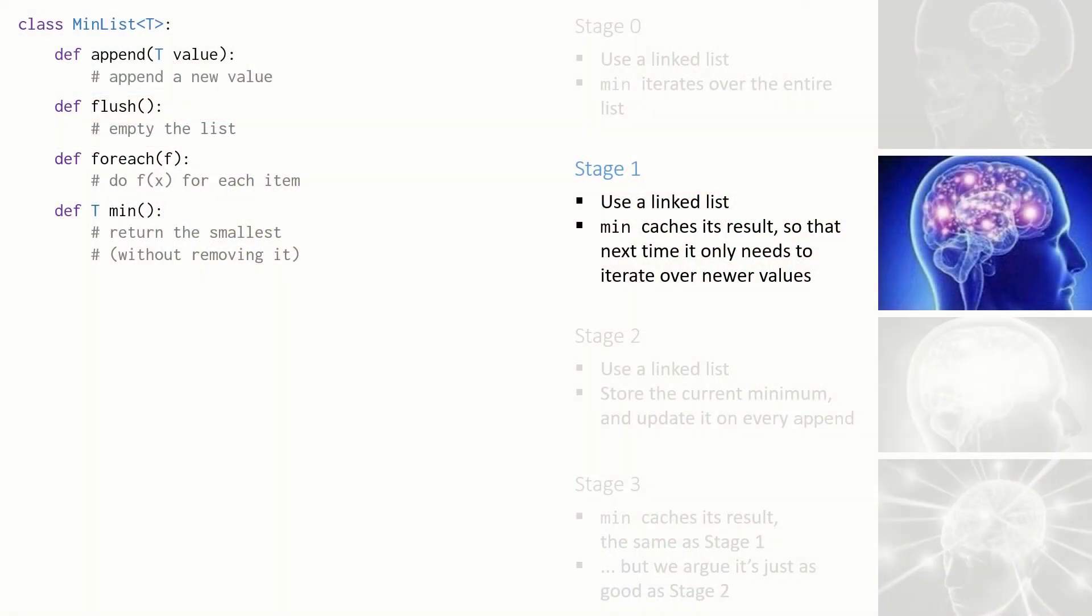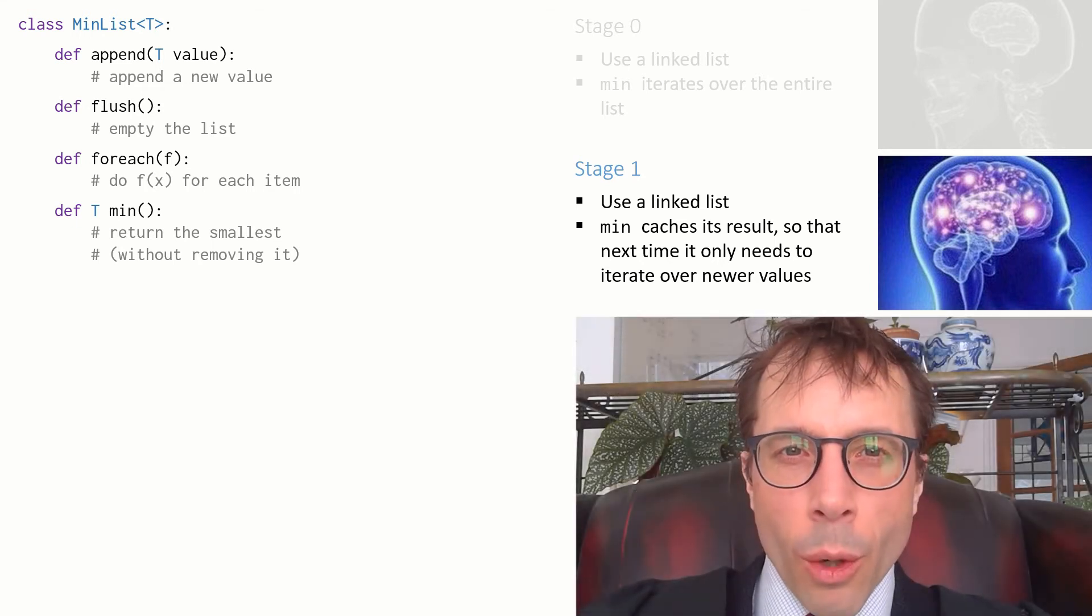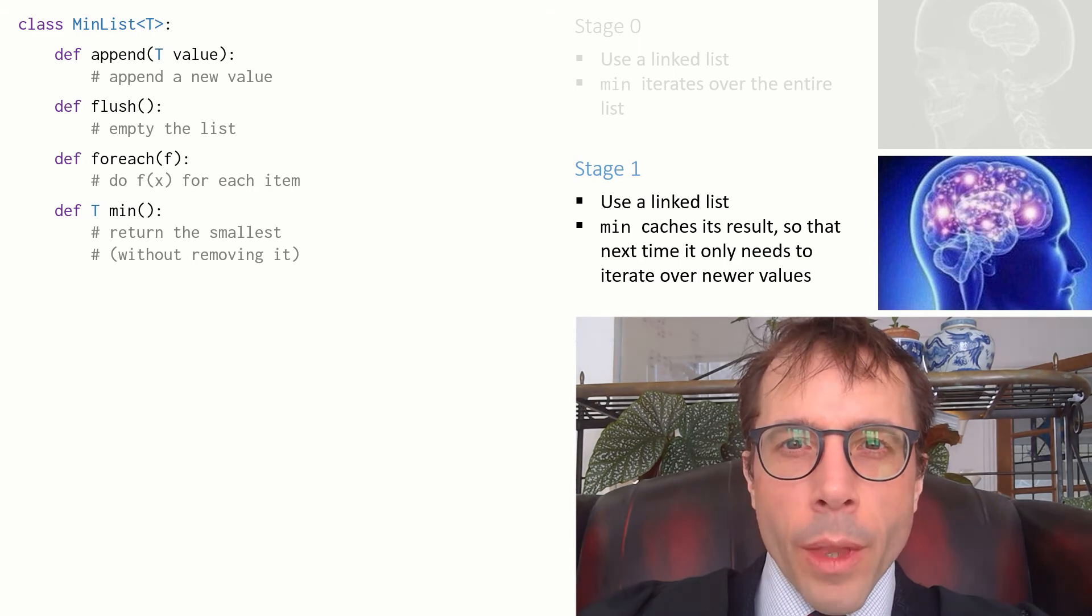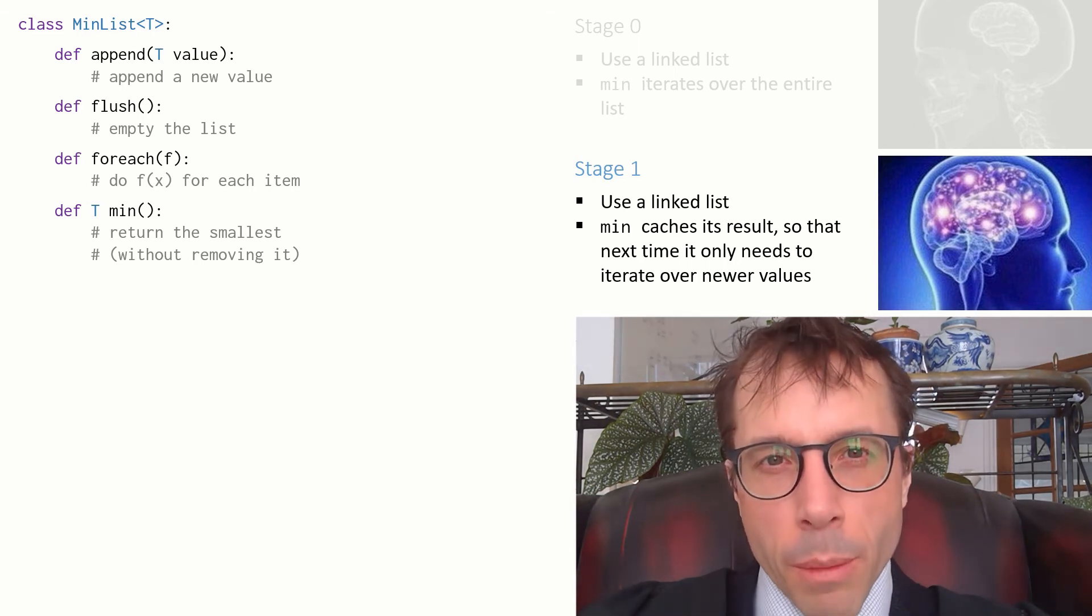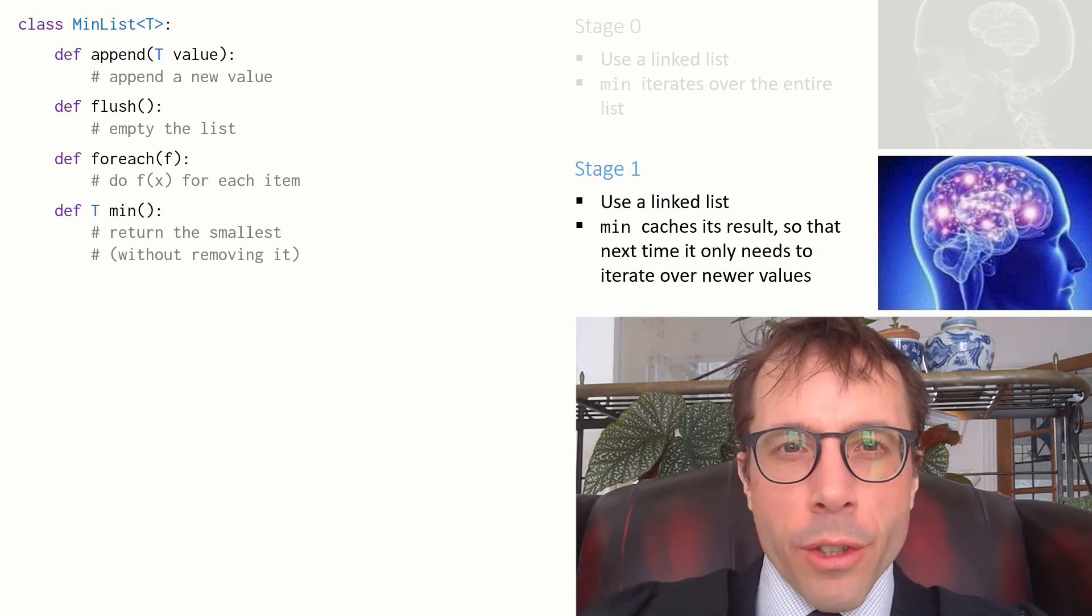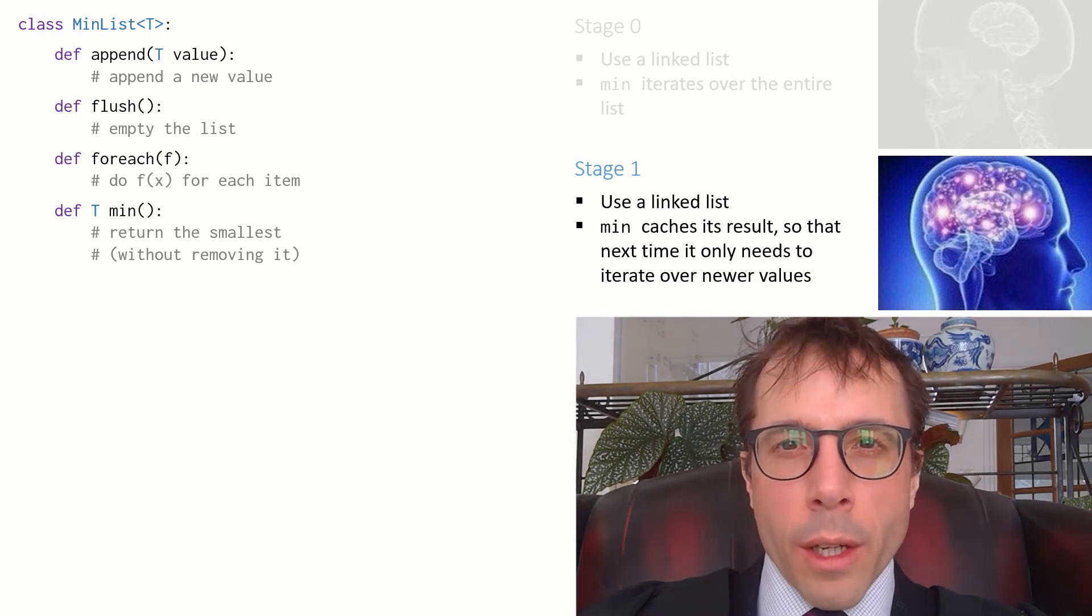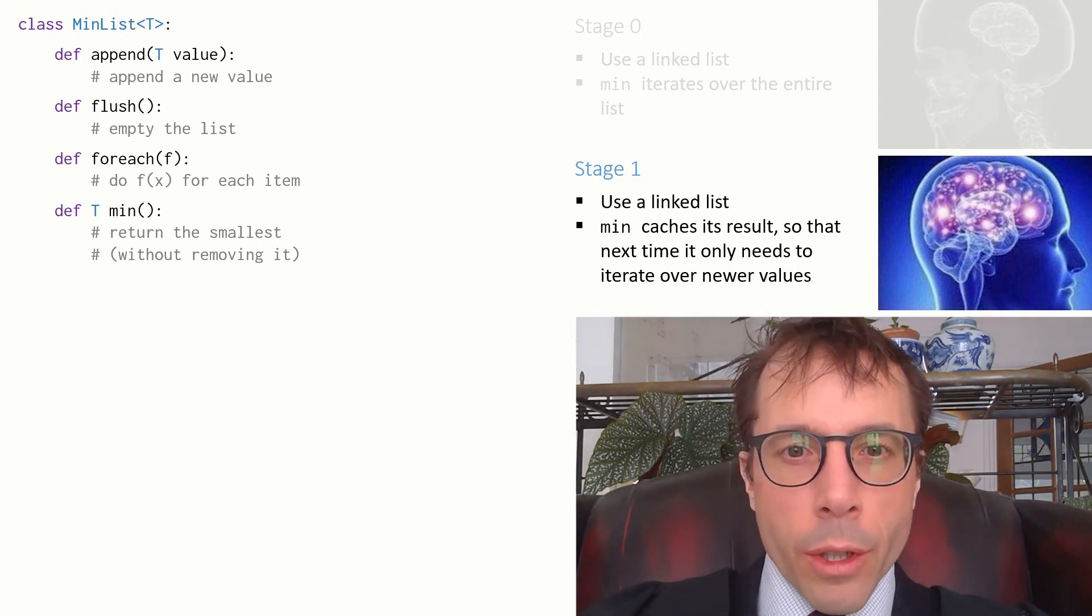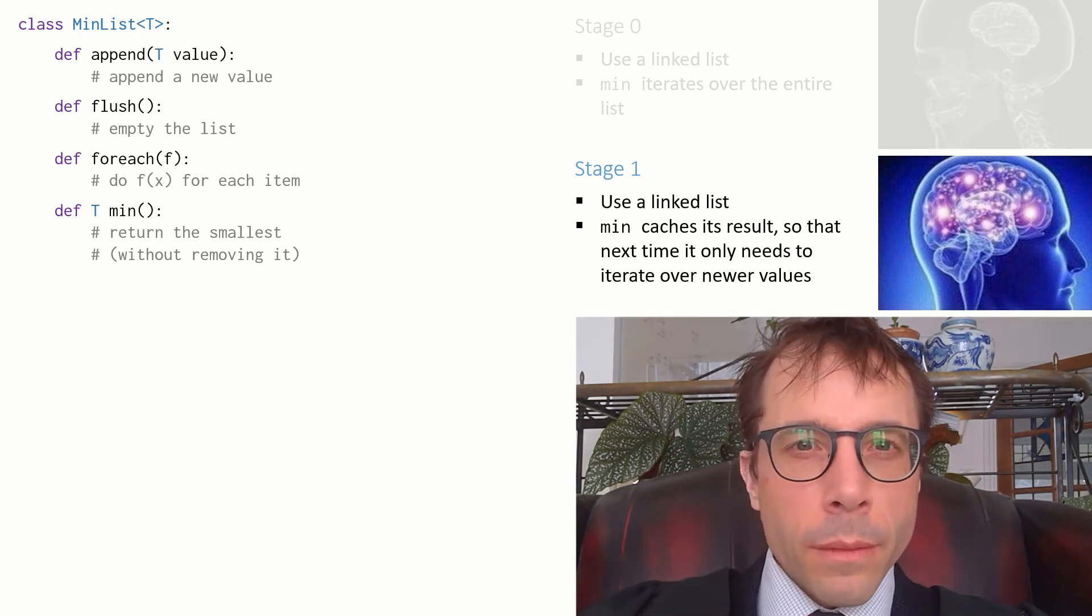Okay, with these interpretations in mind, let's go back to a problem we looked at several videos earlier, the min list. If you don't remember this example, go back to the video about aggregate analysis for a refresh. The idea is we want a data structure which will store a list of items and we may from time to time ask for the minimum and we want an implementation that's more efficient than just crawling through the entire list every time we're trying to find the minimum. We looked at this implementation called stage one where we cache the minimum so that next time we're asked for it we only have to look at newer items.